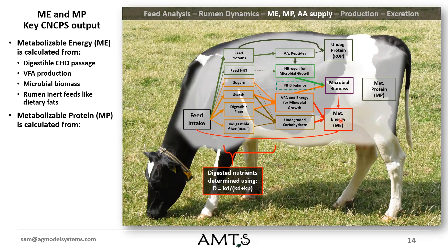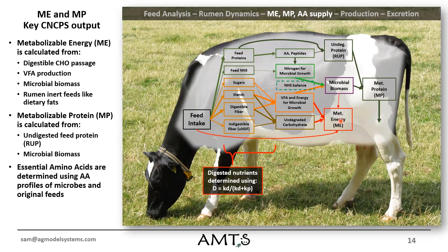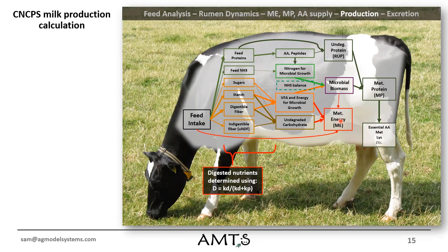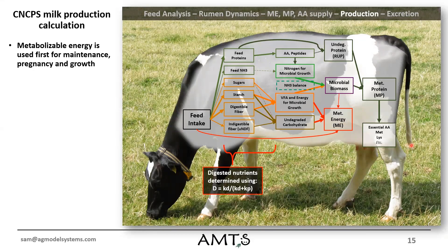The model of metabolizable protein is calculated from the undegraded feed protein and the microbial protein. And then what we can do is assign those amino acid profiles, and that allows us to calculate a few different things such as methionine ratios, methionine amounts, lysine, et cetera — actually for all essential amino acids.